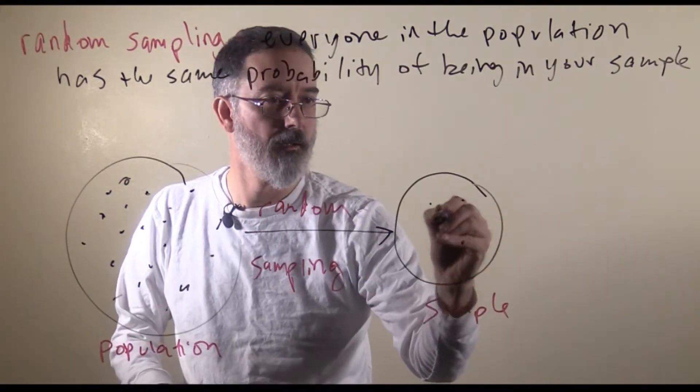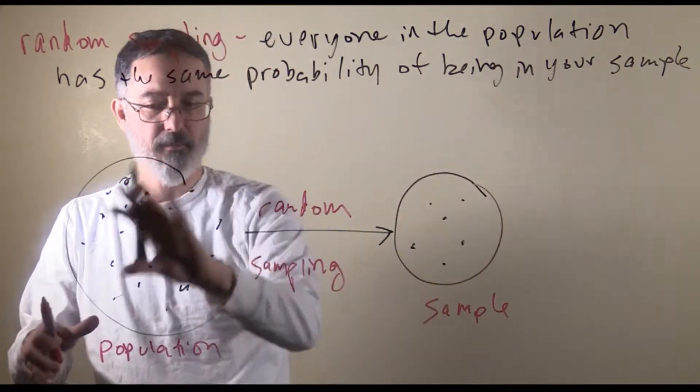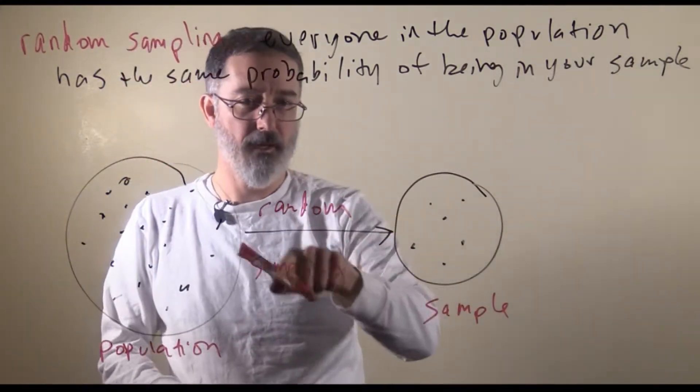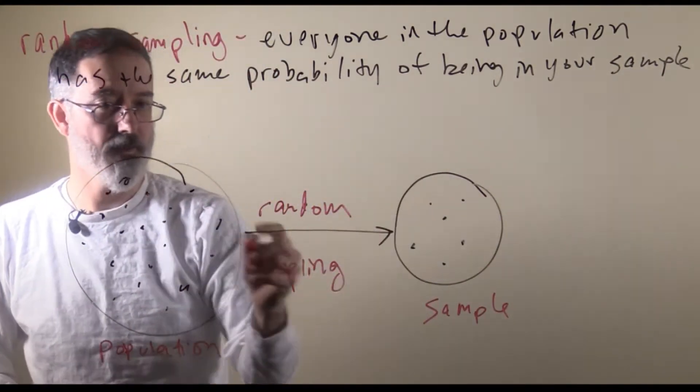These are the individuals that are in our sample. They are a subset of the population. So, if it is a random sample, every one of these people has an equal probability as everybody else of ending up in our sample.